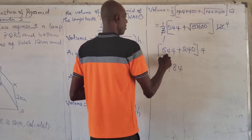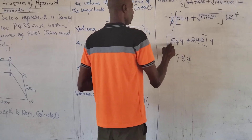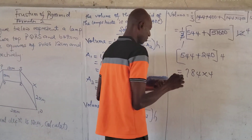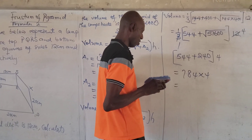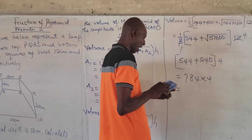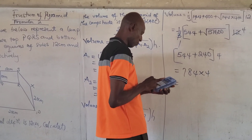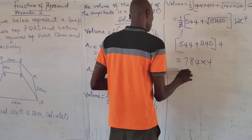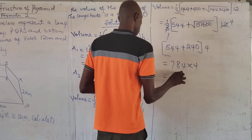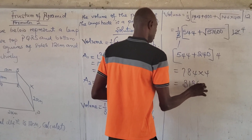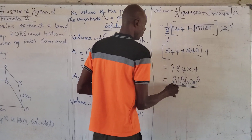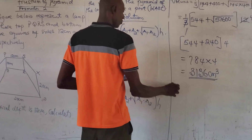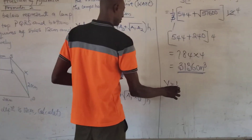So 544 plus 240 gives us 784. Multiplying 784 times 4 — because 1 over 3 times 12 gives us 4, since 3 times 4 is 12 — gives us 3,136 centimeters cubed. Take note: we are dealing with volume, so centimeters cubed.